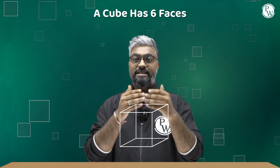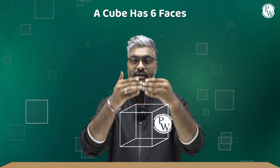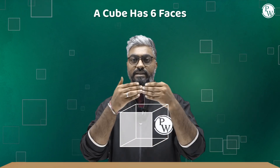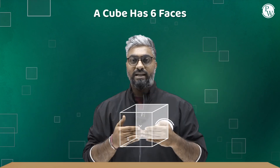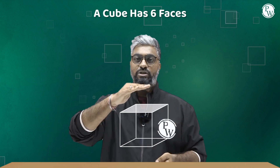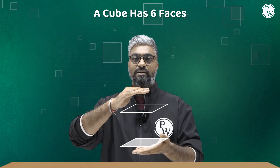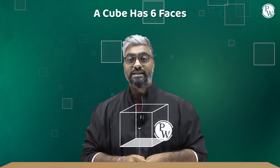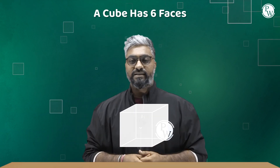So let's start with a simple concept like a cube. We know that a cube has six faces: one at the front, one at the back, two on the sides, one on the top and one at the bottom. So this gives us six faces.